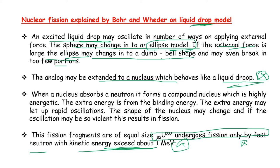To summarize the liquid drop model: when a high-energy neutron is absorbed, the nucleus gains extra binding energy causing rapid oscillations. The sphere changes shape to an ellipse; with more external force it becomes a dumbbell and splits into two nuclei. Uranium-238 requires fast neutrons with kinetic energy of 1 MeV for fission.